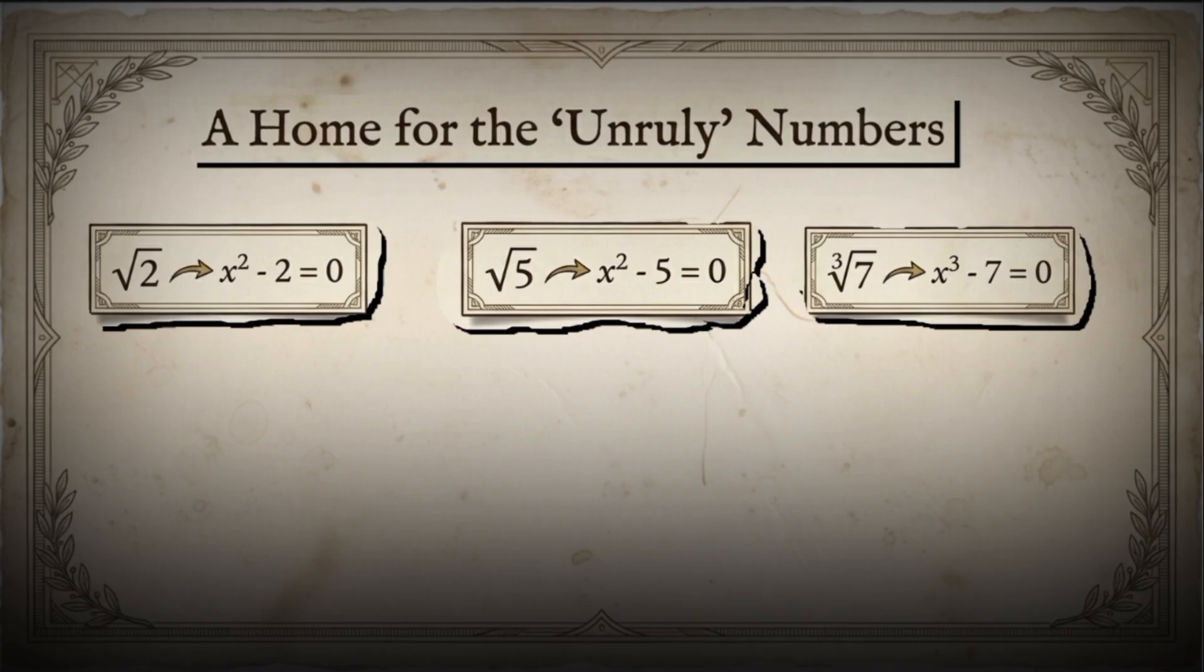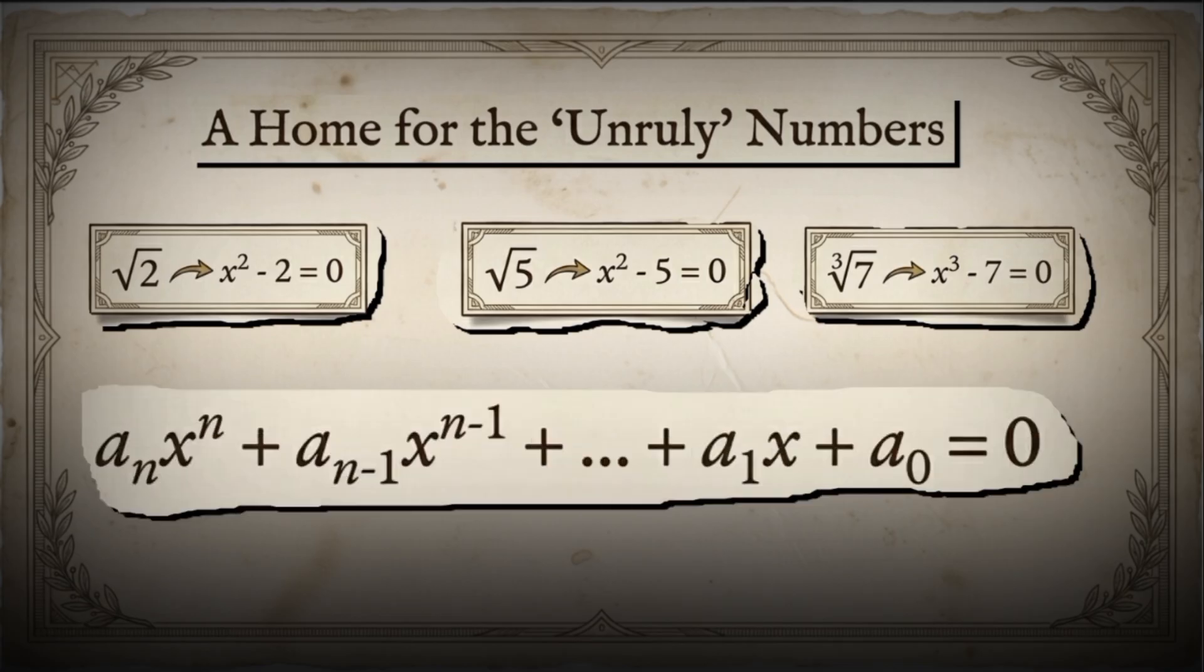Now, let's write the most general polynomial equation. It has the form a sub n times x to the power n plus a sub n minus 1 times x to the power n minus 1 and so on, all the way down to a sub 1 times x plus a sub 0 equals 0.